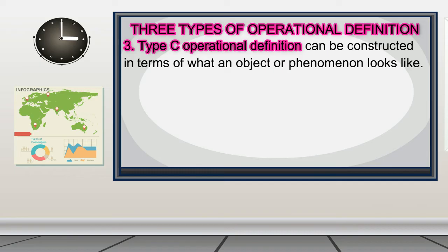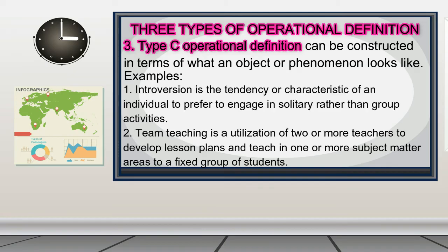Type C operational definition can be constructed in terms of what an object or phenomenon looks like. For example: 'Introversion is the tendency or characteristic of an individual to prefer to engage in solitary rather than group activities.' 'Team teaching is a utilization of two or more teachers to develop lesson plans and teach in one or more subject matter areas to a fixed group of students.'